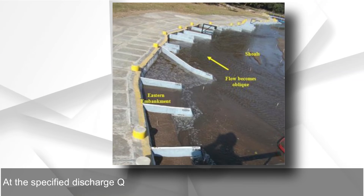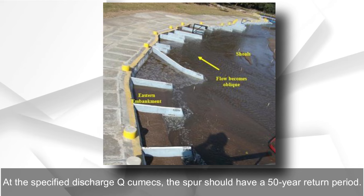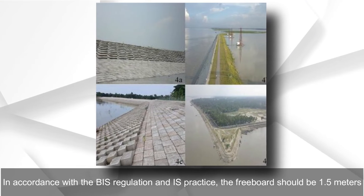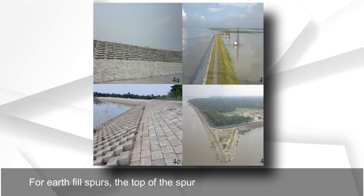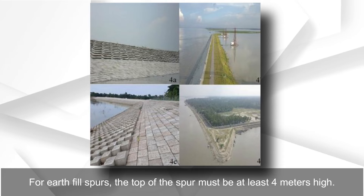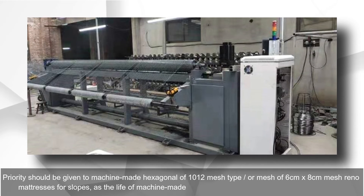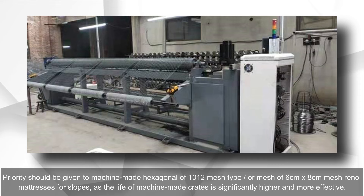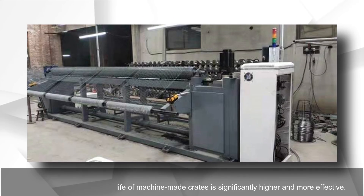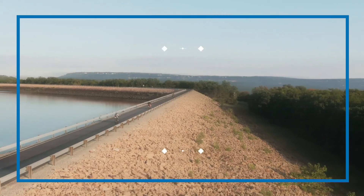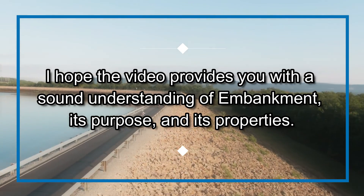Spur: At the specified discharge, the spur should have a 50-year return period. In accordance with BIS regulation, the freeboard should be 1.5 meters. For earth fill spurs, the top of the spur must be at least 4 meters high. Priority should be given to machine-made hexagonal 1×12 mesh type or 6 cm × 8 cm mesh Reno mattresses for slopes, as the life of machine-made crates is significantly higher and more effective.